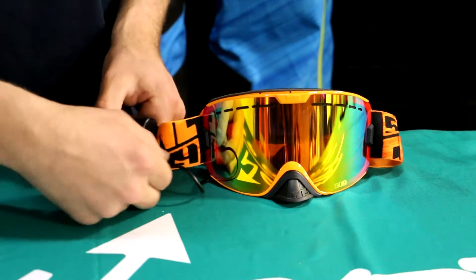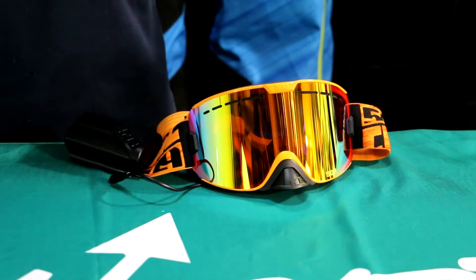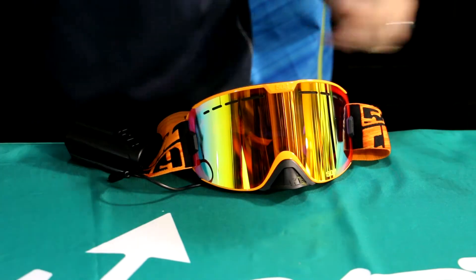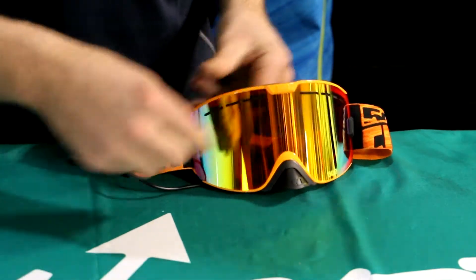So first thing you're going to want to do is unplug this from the power unit, that's going to be a great place to start. Then of course as any Kingpin lens change goes, you're going to want to turn the tabs with their 90 degree change.